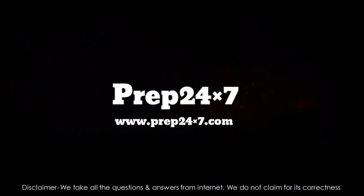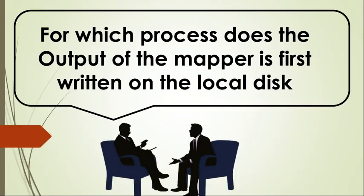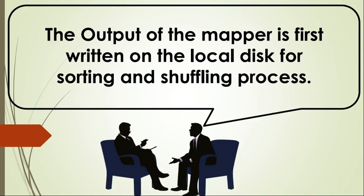Welcome to prep24x7. For which process does the output of the mapper get first written on the local disk? The answer is: the output of the mapper is first written on the local disk for the sorting and shuffling process.